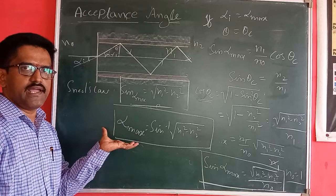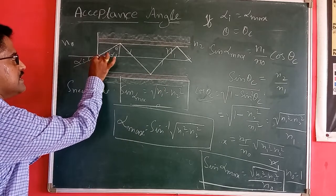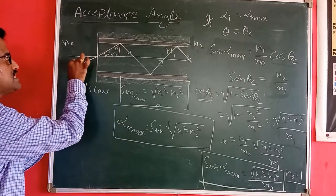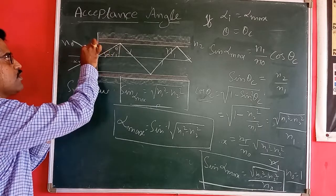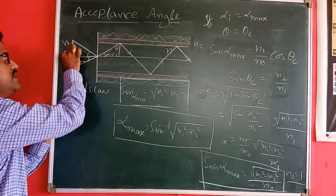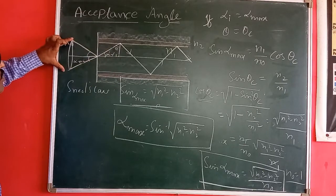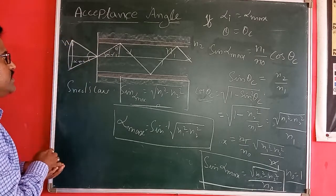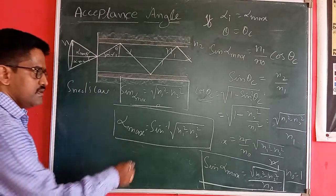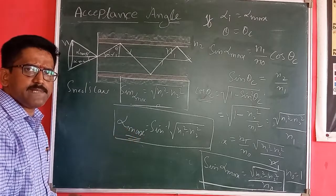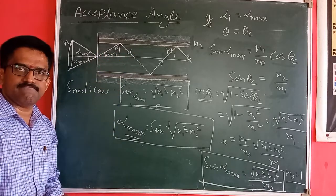If you increase the incident angle beyond the accepting angle, the light ray cannot enter into the core. If the angle is within alpha_max, the light ray can enter into the core. The light ray will be accepted by the optical fiber only at these angles, and this particular cone is known as the accepting cone. So alpha_max is the accepting angle — the maximum angle to be accepted by this optical fiber.